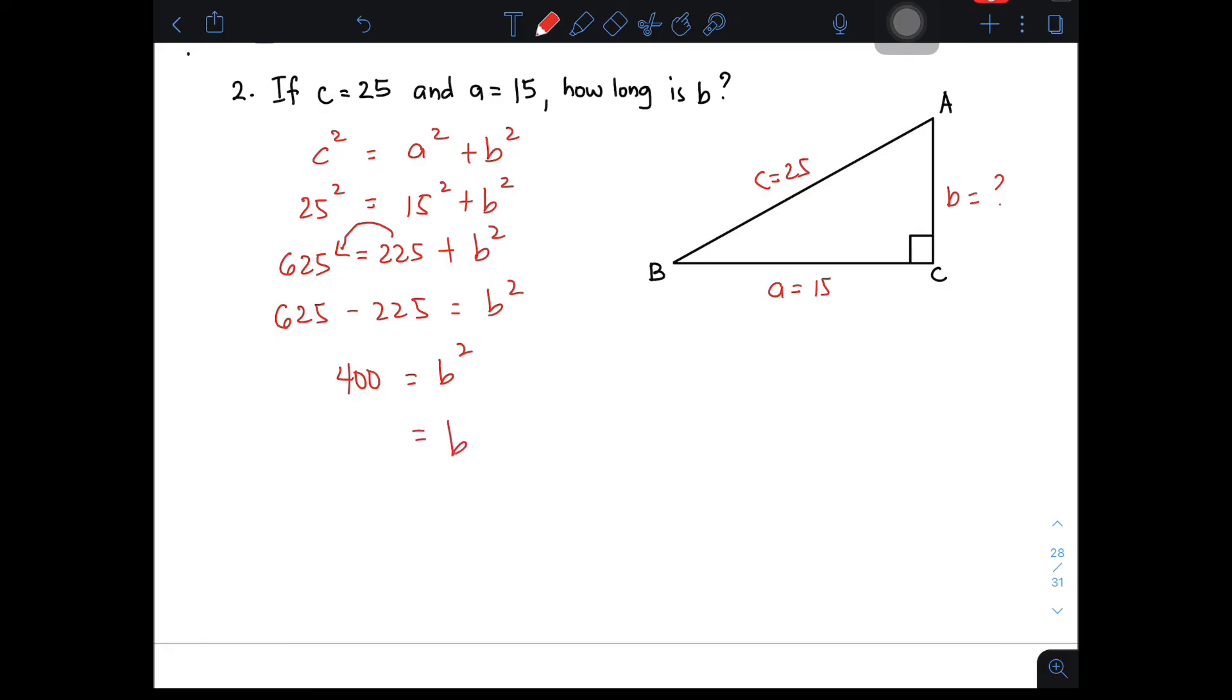So, 400 is equal to B squared. And then, for you to get the value of B, simply get the square root of B squared as well as the square root of 400. The square root of B squared is simply B and the square root of 400 is 20. Therefore, the value of B is simply 20 units. So, I hope na sa ating given video, you already know the concept of the Pythagorean theorem, kung saan siya ginagamit, at kung paano siya gamitin.